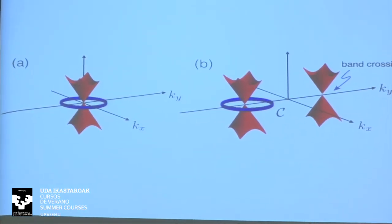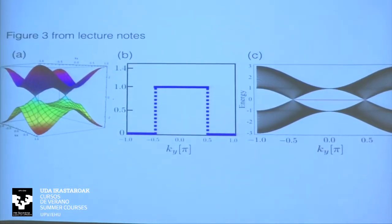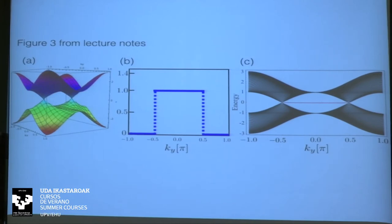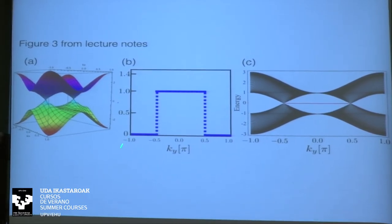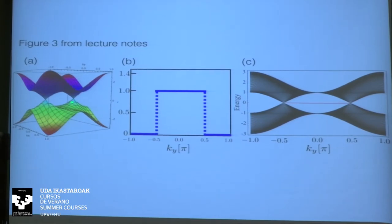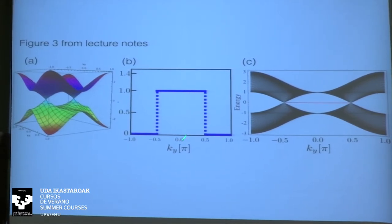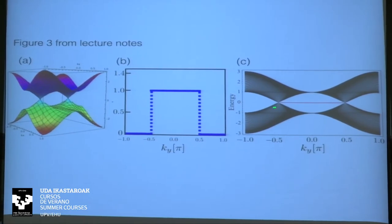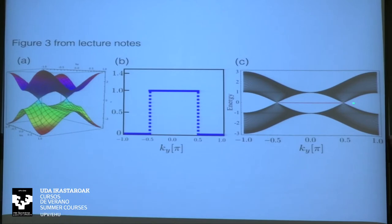There is a bulk-boundary correspondence, analogous to the Chern number: whenever this winding number is ±1, there must be an edge state. Parametrizing contours along k_x and varying k_y, when the contour lies between the two point nodes it encloses one of them, giving winding number ±1. Correspondingly, the edge-state spectrum shows a zero-energy mode precisely in the region connecting the two point nodes.